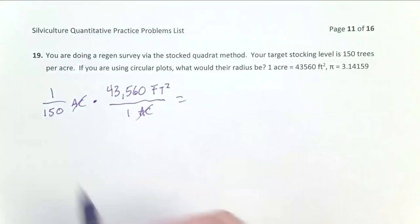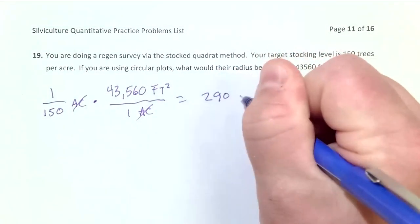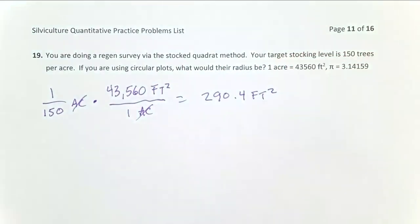And in this particular case, 43,560 divided by 150 equals 290.4 feet squared. So now I know the area of the plot that I want. That's an area.